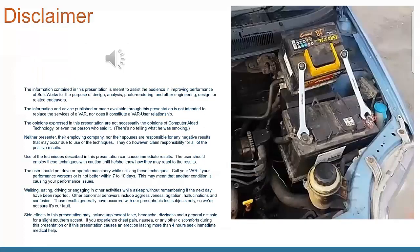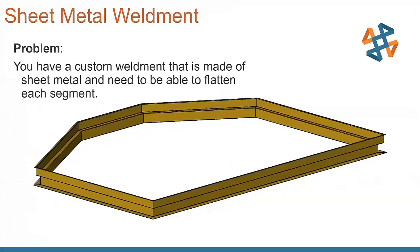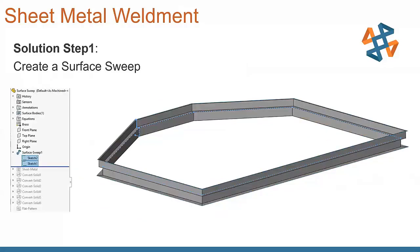So we usually run a little disclaimer here. It basically says we're not responsible for anything that happens during the course of this presentation or thereafter. So our first problem that we have here is sheet metal as a weldment. We have a custom weldment that is to be made out of sheet metal, and we need to be able to flatten each section so that we can fold it up. We want to design it in that final stage, so how do we get to that?